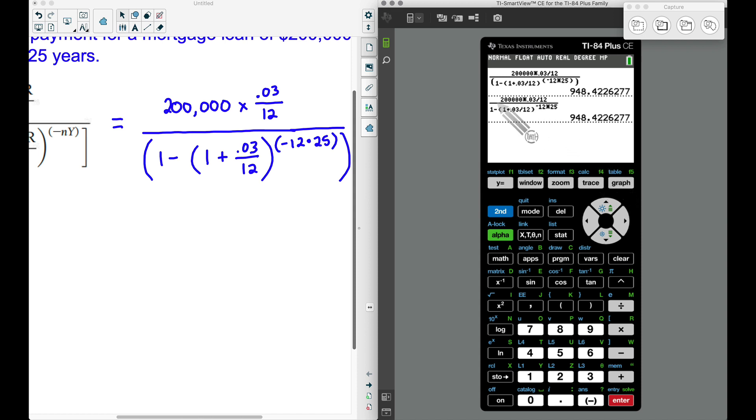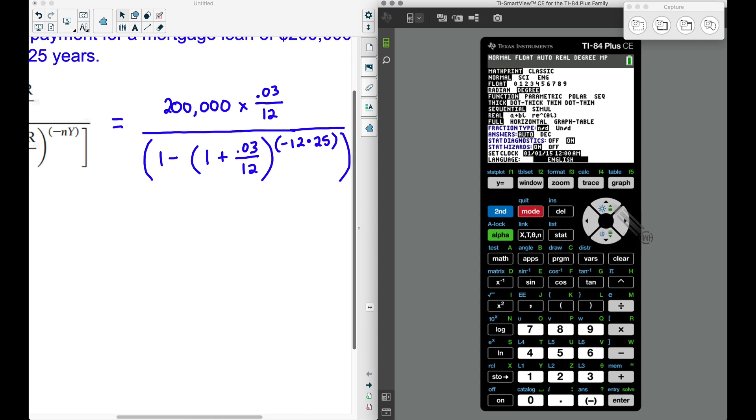Now let's act like we don't have this fraction bar, or our exponent does not work like this. I'm going to go to mode and put it on classic. This is how the TI-83 would be handled. I'm going to quit out of this.